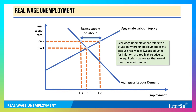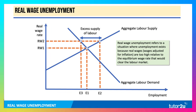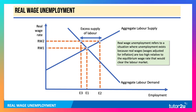In this diagram, we're using aggregate labour supply and aggregate labour demand, with the real wage on the y-axis and employment on the x-axis. The market equilibrium wage rate is RW1.